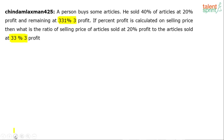Let me consider the value as 33.33% — I'm assuming this is 33⅓ percentage. Similarly, the other value is also 33⅓ percentage. So now with this assumption, let's try the solution. The person sold 40% of articles at 20% profit and remaining at 33⅓% profit. If percent profit is calculated on selling price, what is the ratio of selling price of articles sold at 20% profit to articles sold at 33⅓% profit?